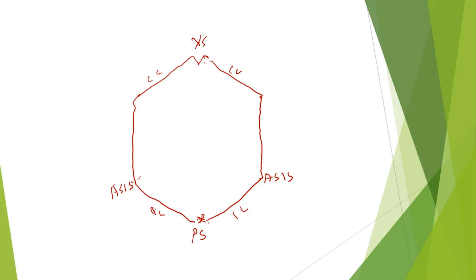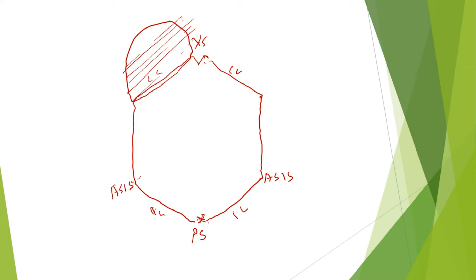Let's start with the abdominal viscera in the upper abdomen. The two big upper abdominal organs are the liver on the right side and the spleen on the left side. Most of the liver is in the thorax, encroaching up to almost the fourth intercostal space. The spleen is related to the 10th, 11th, and 12th ribs posteriorly, and is again well protected by the ribs.